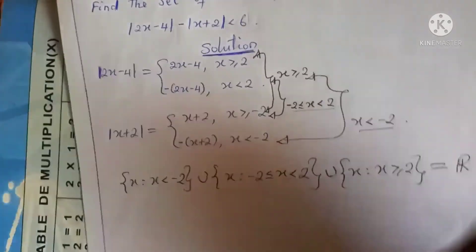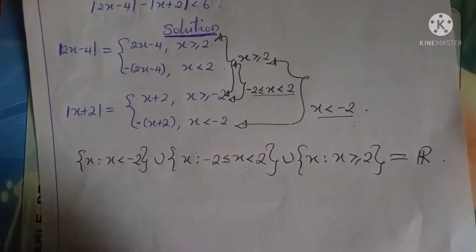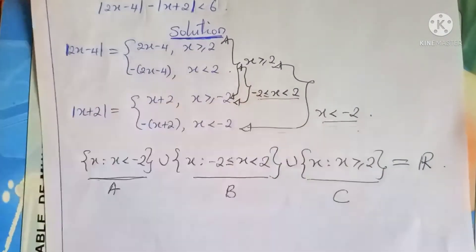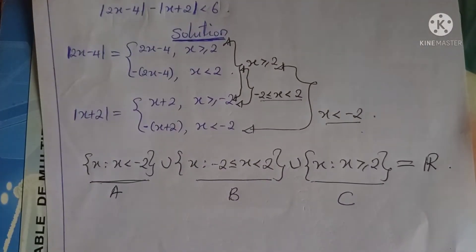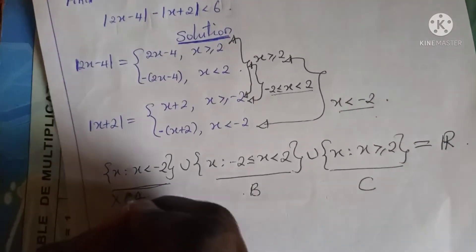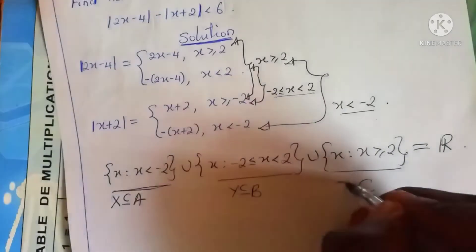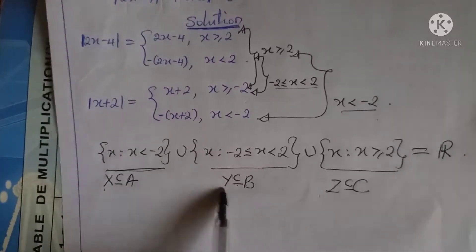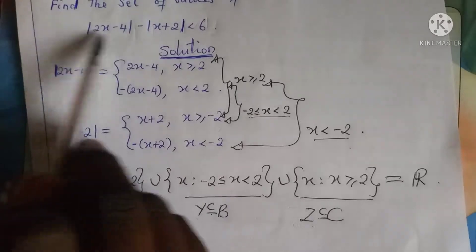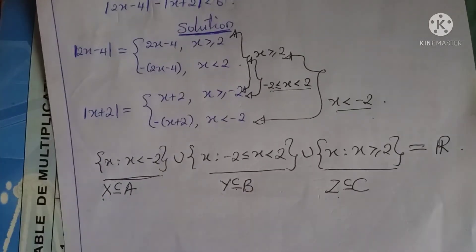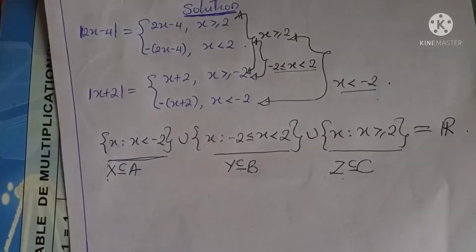Together these three sets give us the set of real numbers. Let's call this set A, this one B, and this one C. We're going to find the subset of A, the subset of B, and the subset of C which satisfy the given inequality — calling these x, y, and z respectively. At the end, we obtain the solution by taking the union of x, y, and z.